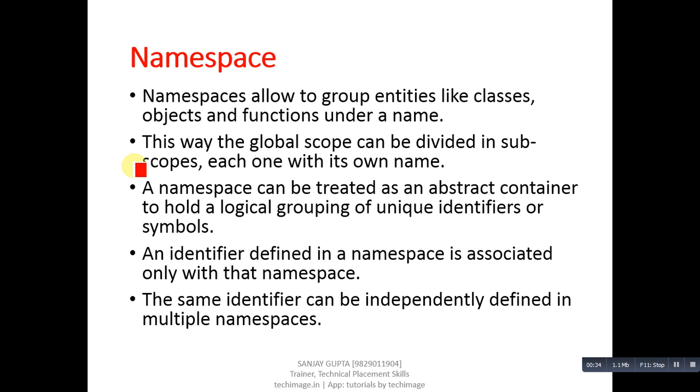If you want to categorize classes or functions in a C++ program into subscopes, you can implement namespaces. A namespace can be treated as an abstract container to hold a logical grouping of unique identifiers or symbols. An identifier defined in a namespace is associated with only that namespace. The same identifier can be independently defined in multiple namespaces.